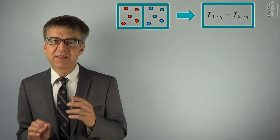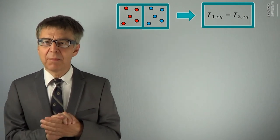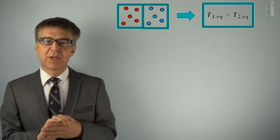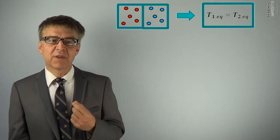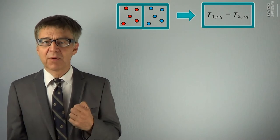If we want to express the disequilibrium in numbers, then we may take the difference in temperature as a measure for the distance or the gap of the initial systems from thermal equilibrium.